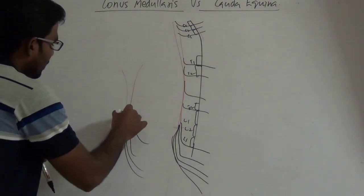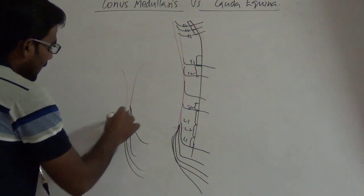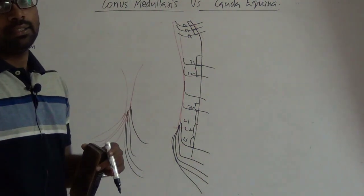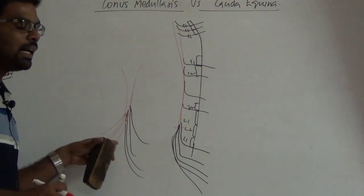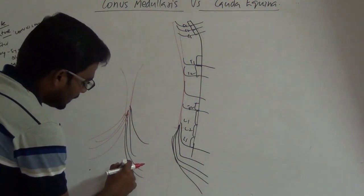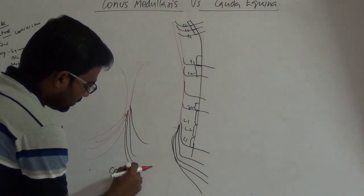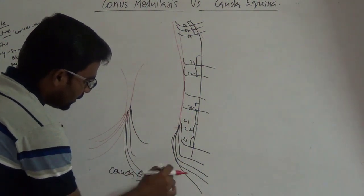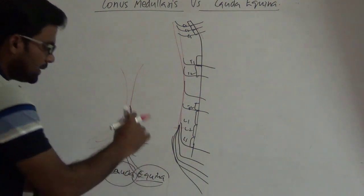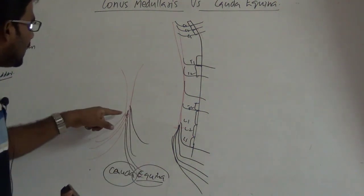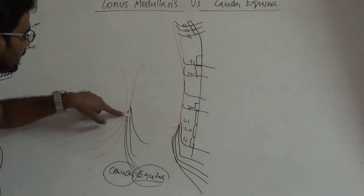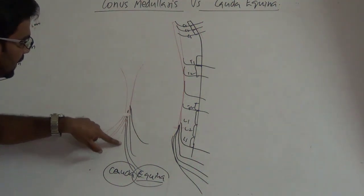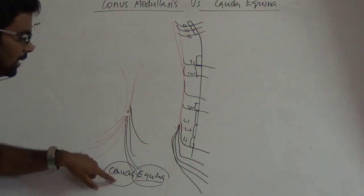When you look at the spinal cord near its ending, there are multiple roots traveling down and exiting at different foramina. These roots on both sides collectively appear like the tail of a horse. This is called cauda equina — 'equina' means horse and 'cauda' means tail. So below the level of L1 or L2, the appearance of these descending nerve roots is called cauda equina.